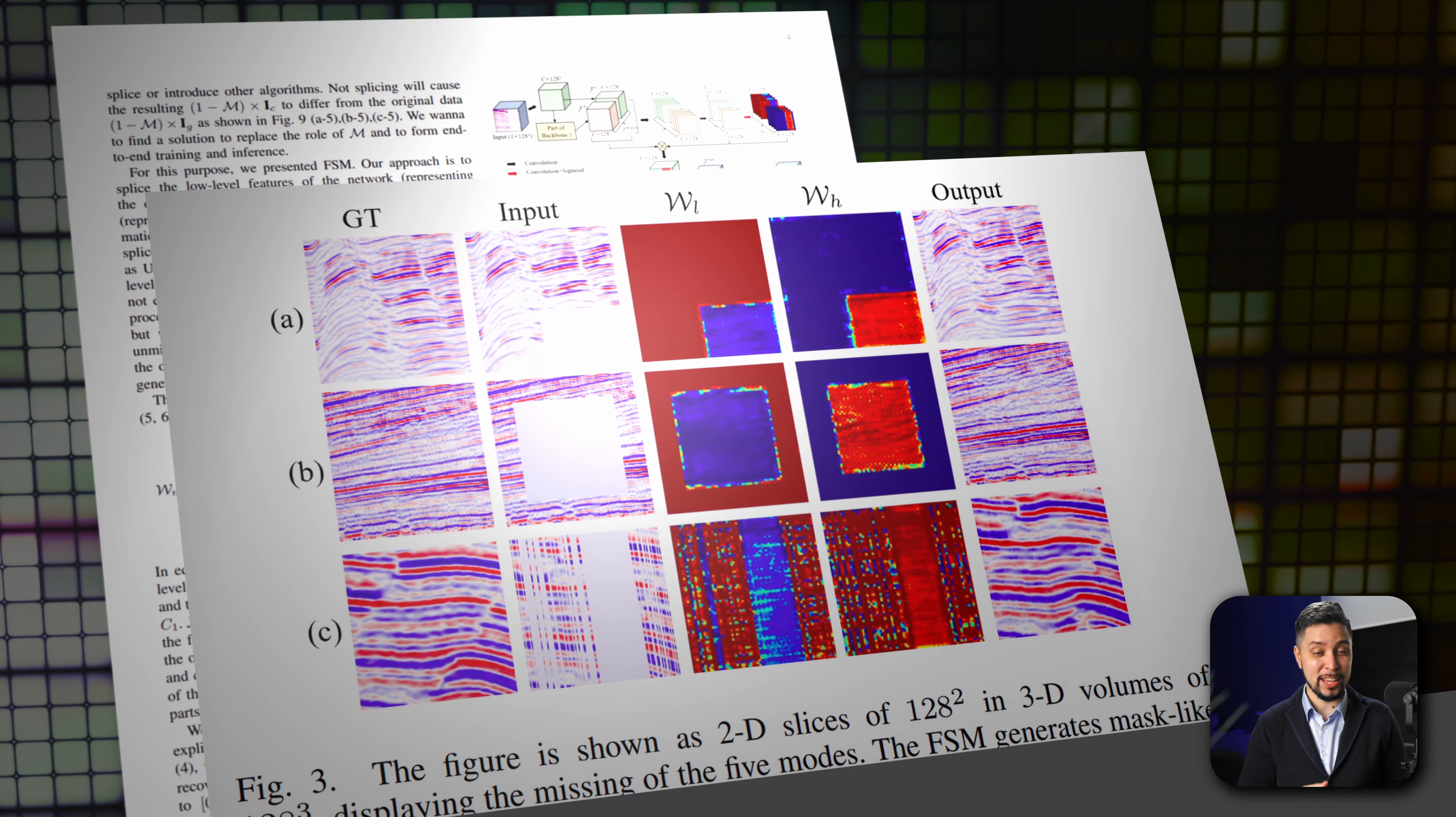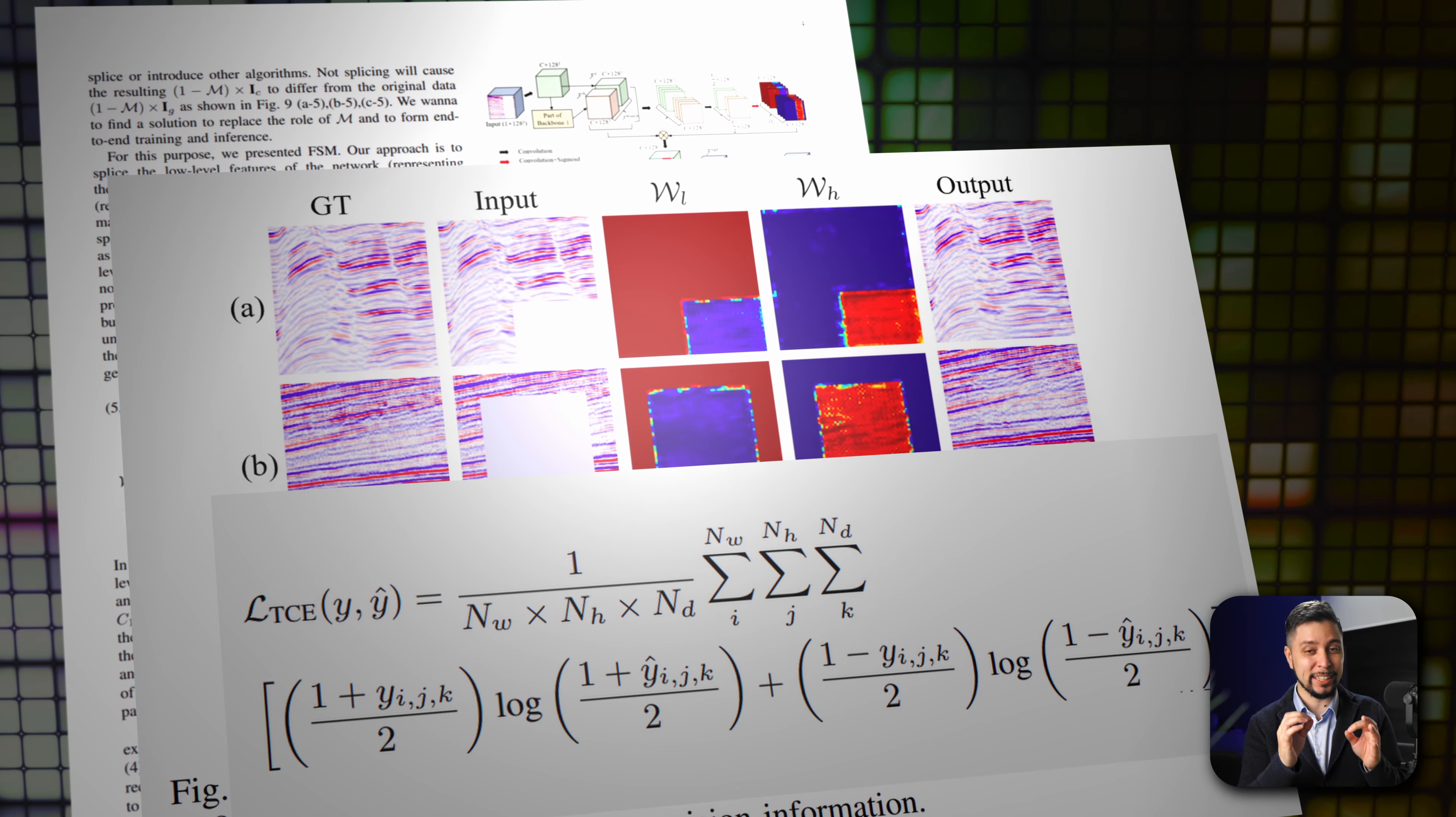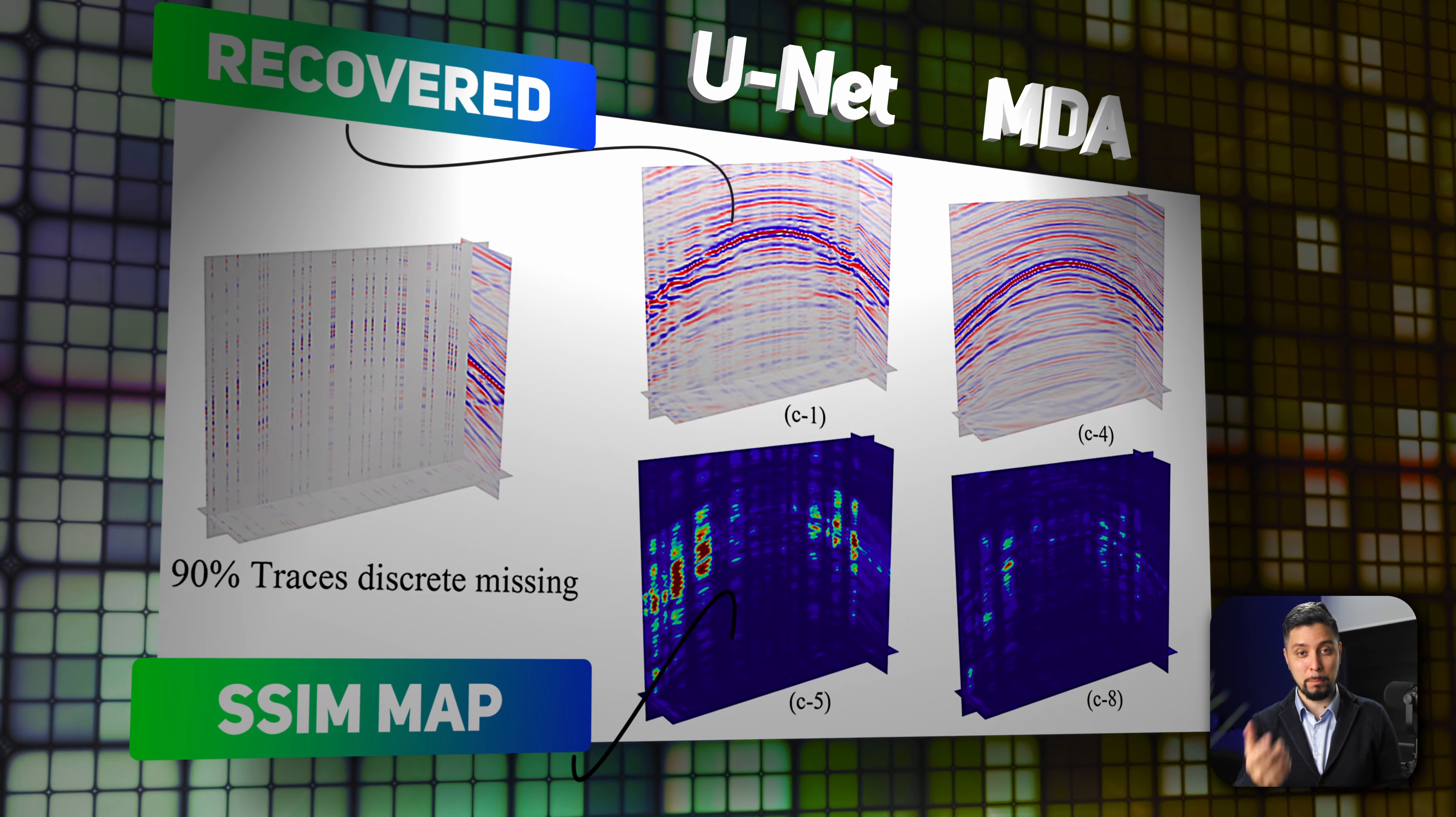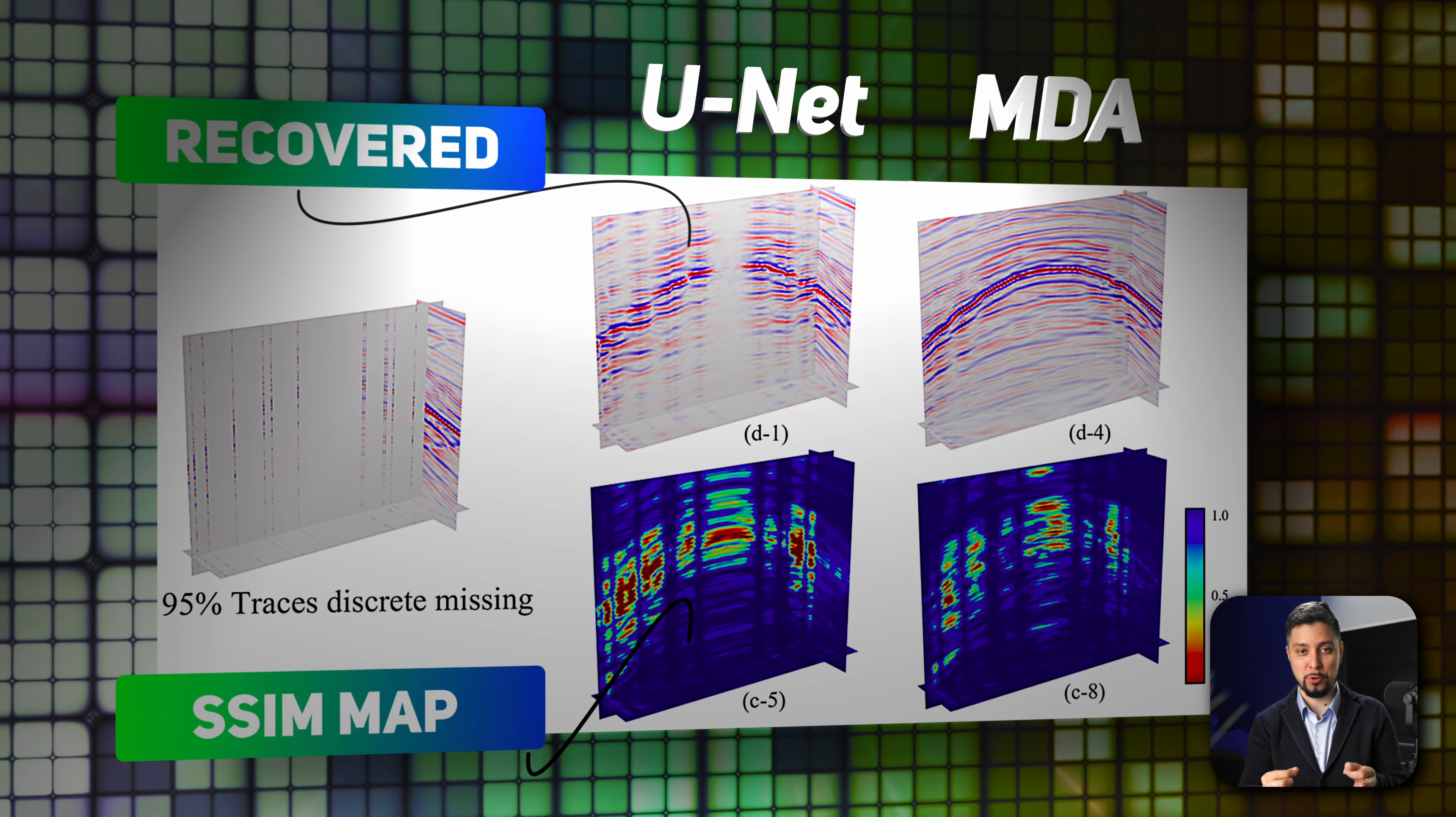Now let's transition to the results. MDA-GAN was tested on multiple datasets and compared with the U-Net method, a popular autoencoder-based approach.